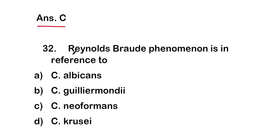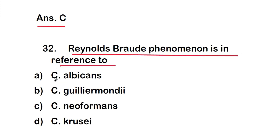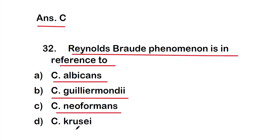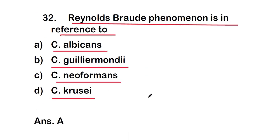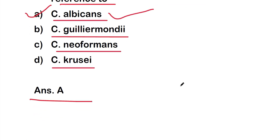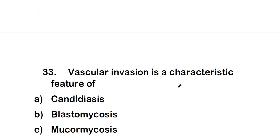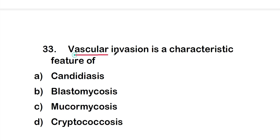Question 32: Reynolds-Brode phenomenon is in reference to option A - Candida albicans, option B - Candida guilliermondii, option C - Candida neoformans, or option D - Candida krusei. The right answer is option A, Candida albicans. Reynolds-Brode phenomenon is in reference to Candida albicans.